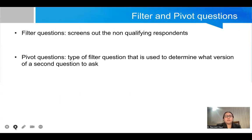Filter or pivot questions: in filter questions they screen out the non-qualifying respondents so you know that your responses are accurate and correct. In pivot questions it is a type of filter question that is used to determine what version of a second question to ask. So it will take the respondent in that direction to answer your questions.